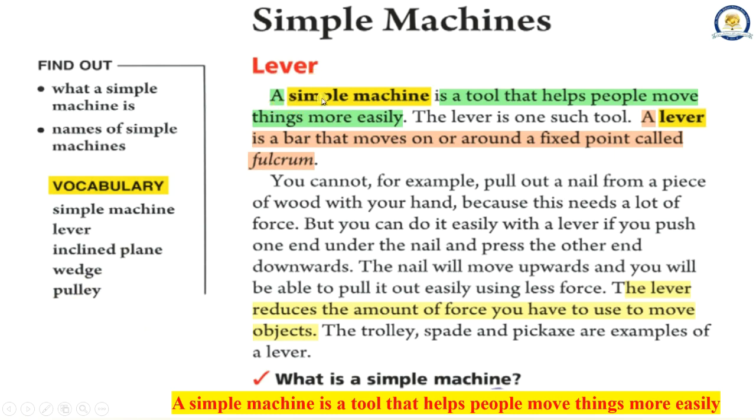Lever. A simple machine is a tool that helps people move things more easily. The lever is one such tool. A lever is a bar that moves on or around a fixed point called fulcrum. You cannot, for example, pull out a nail from a piece of wood with your hand because this needs a lot of force. The trolley, spade and pickaxe are examples of a lever.